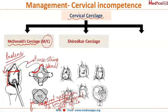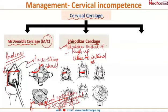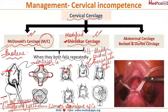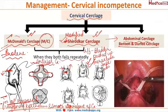Apart from McDonald's cerclage, there is modified Shirodkar's cerclage, in which an incision is given on the anterior aspect of the cervix, the bladder is separated and pushed up, and a suture is taken high up close to the internal os — usually using Mersilene tape. If both procedures fail repeatedly in previous pregnancies, abdominal cerclage is attempted in the next pregnancy. First described by Benson and Durfee, abdominal cerclage can be done by laparotomy or laparoscopically.